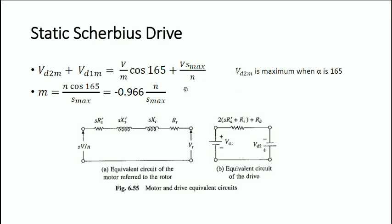Now consider the equivalent circuit of the motor referred to the rotor side, without the magnetizing component. The voltage source is SV/N, and the impedances include the stator resistance and reactance referred to the rotor (S·RS', S·XS'), rotor reactance XR, and rotor resistance RR. This gives us the equivalent circuit of the drive referred to the motor rotor.